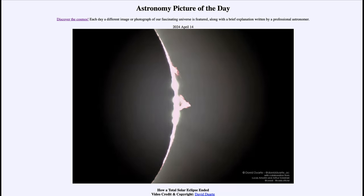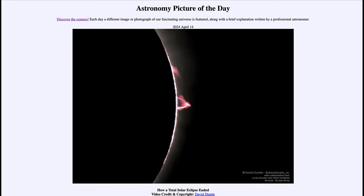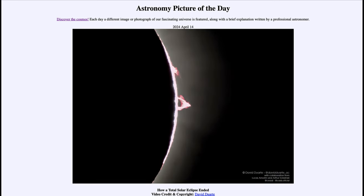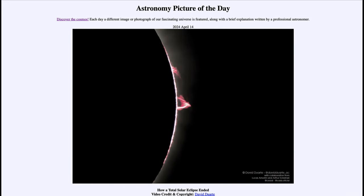Things like the prominences are only visible when you block out the rest of the surface of the sun. Otherwise, they're still there, but you simply cannot see them because the rest of the solar surface is overwhelming.